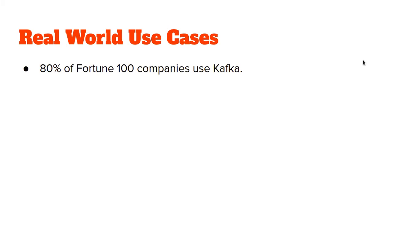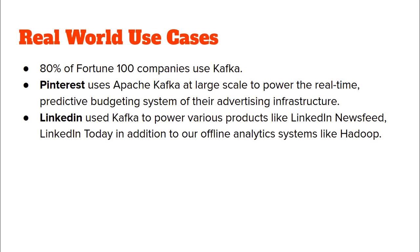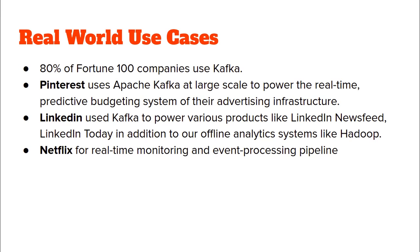Let's have a look at some real-world use cases of Apache Kafka. Apache Kafka is used by 80% of Fortune 100 companies — that adoption rate is really huge and it's a big deal. Pinterest uses Apache Kafka at a large scale for predictive budgeting for their advertising infrastructure, meaning they decide the budget for their advertising in real time using Apache Kafka. LinkedIn uses Apache Kafka to power various products like LinkedIn Newsfeed and LinkedIn Today, in addition to their offline analytics systems like Hadoop. Netflix uses Apache Kafka for real-time monitoring and event processing pipelines.